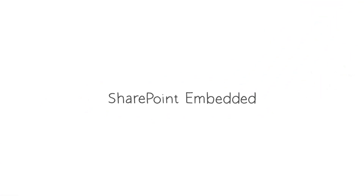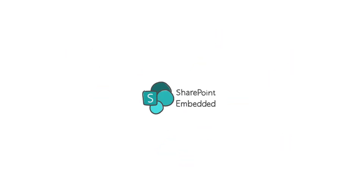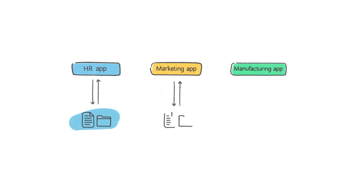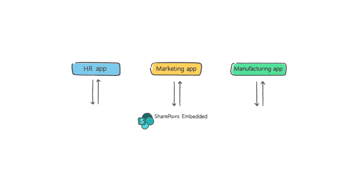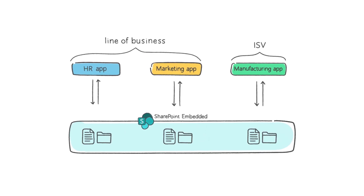Managing files and documents across the many apps businesses rely on is complicated. Microsoft SharePoint Embedded is a new way every app can manage files and documents using trusted Microsoft 365 capabilities like Microsoft Office and Copilot, simplifying both app development and app management. SharePoint Embedded is a developer platform which delivers a universal document management layer for enterprises, and it supports both enterprise line of business apps and third-party ISV apps.